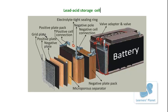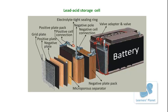Inside the battery there is a grid plate, a positive plate, and a negative plate. The positive plate is the cathode and the negative plate is the anode. Positive and negative plates alternate, and in between them there is a microporous separator. These plates are packed — there is a positive plate pack with a positive cell connection, and a negative plate pack with a negative cell connection.